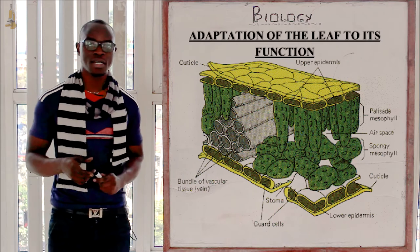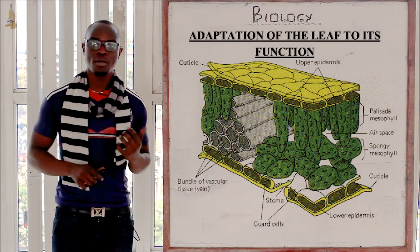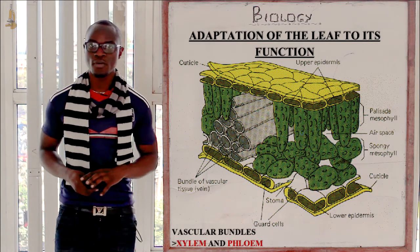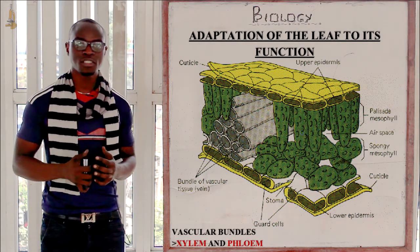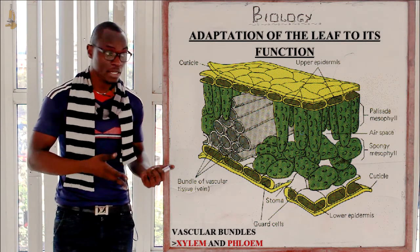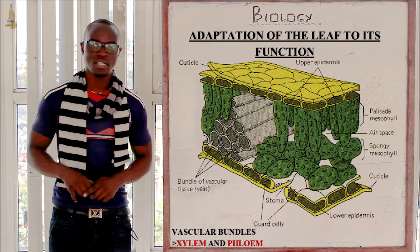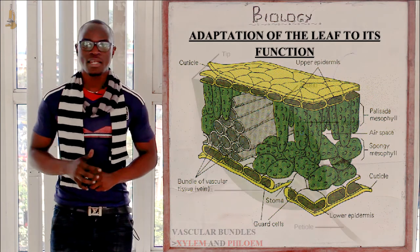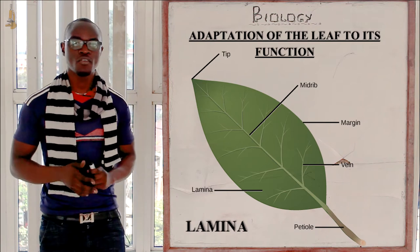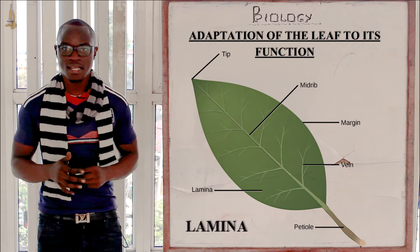Now let's look at the adaptations of the leaf to its function. The leaf contains xylem and phloem whose function is to transport substances within the leaf — xylem transports water and mineral salts while phloem transports food substances. The leaf also has a broad flat lamina for maximum trapping of sunlight.